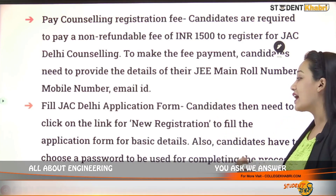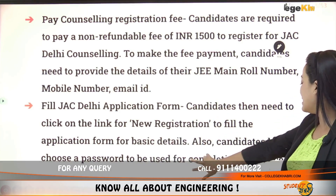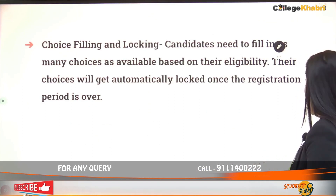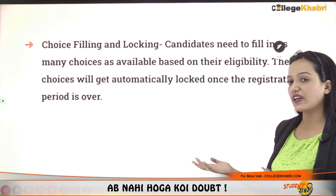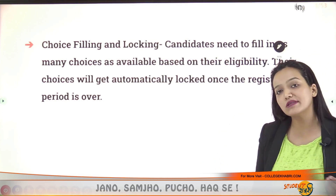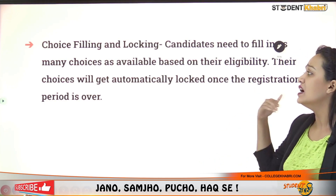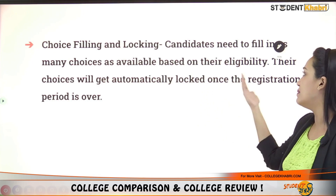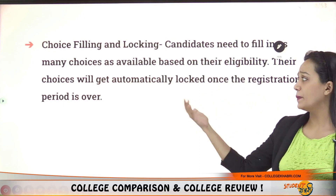Candidates also need to choose a password to complete the registration process. For choice filling and locking, you have to add your preferred branches and colleges. Many choices are available based on your eligibility.